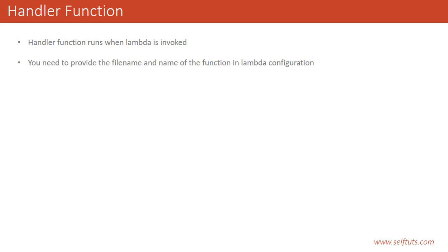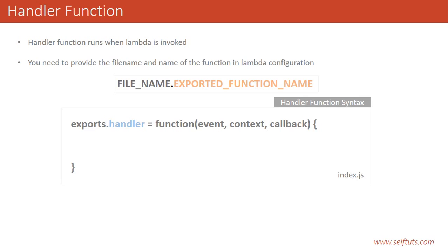You need to provide the file name and the name of the lambda function in the lambda configuration. When you are configuring your lambda function to specify the name of the handler function, you need to provide the file name and the name of the function. Suppose you are writing a bigger project and a single lambda function contains multiple functions — say 10 to 12 functions — you need to specifically provide the name of that function which will handle the request or event. The syntax we use is the name of the file and the exported function name, since we are using Node.js.